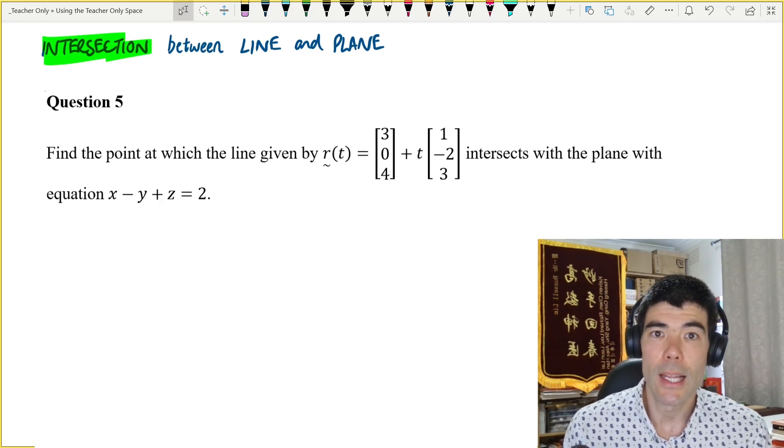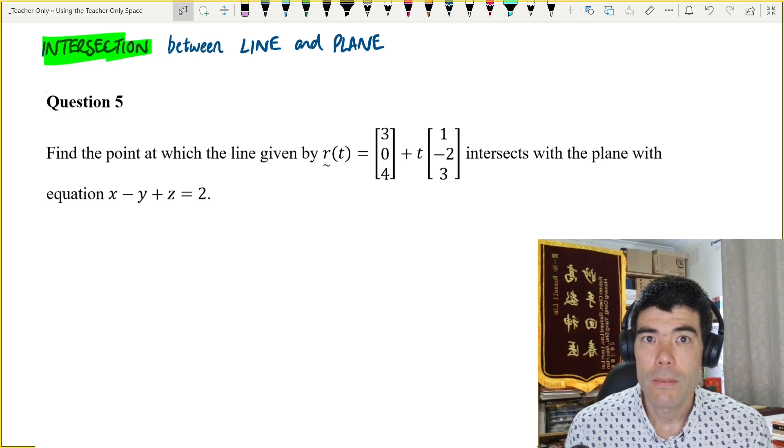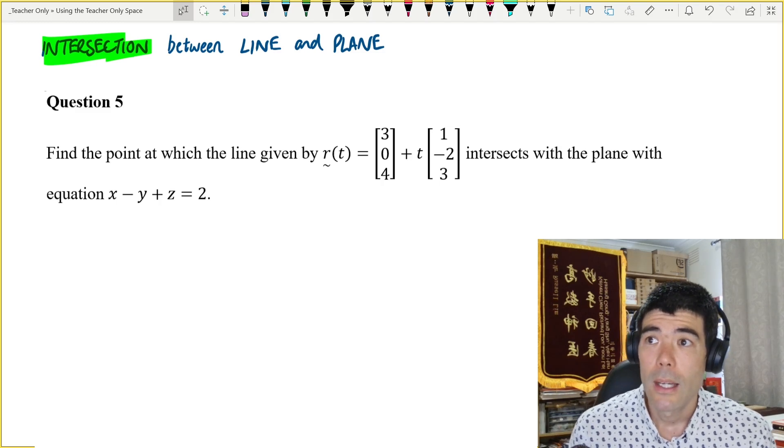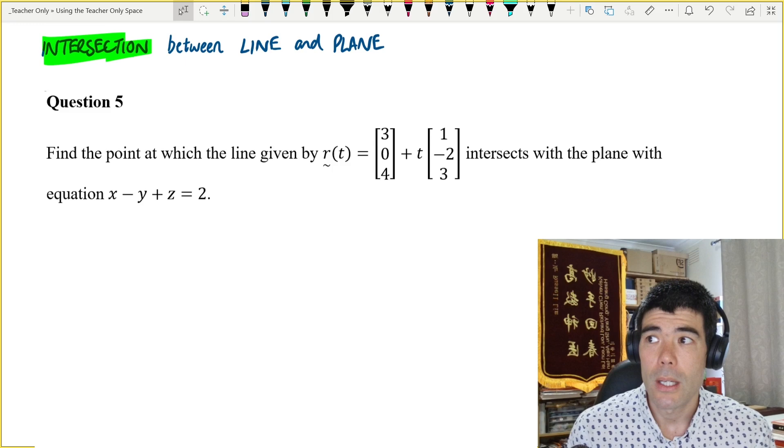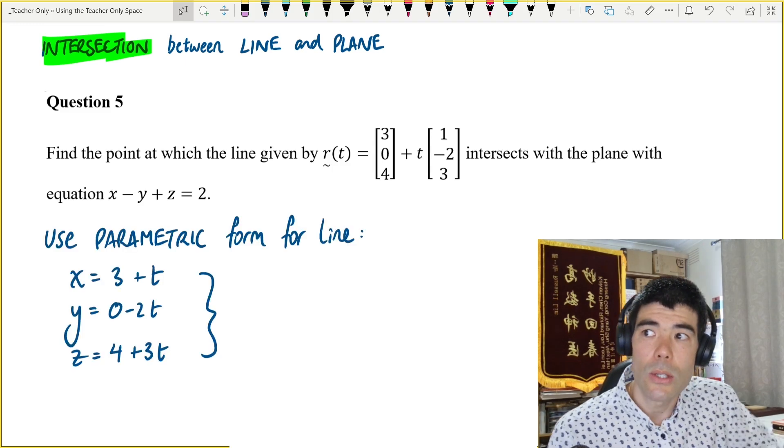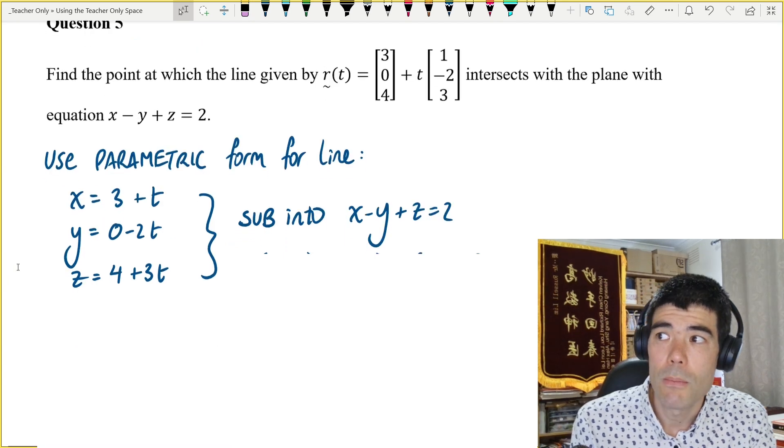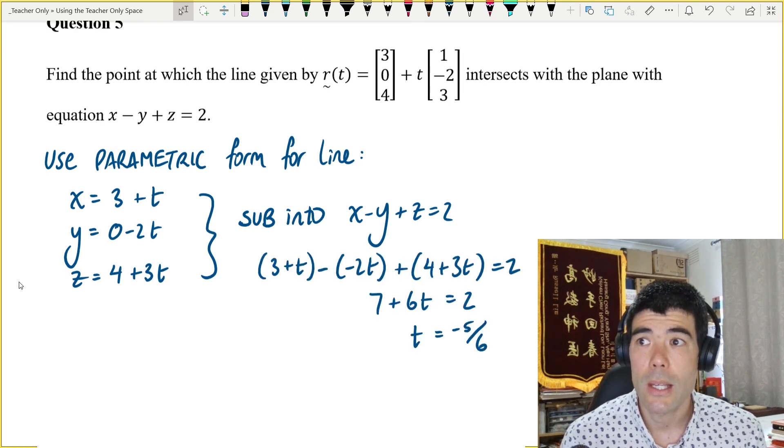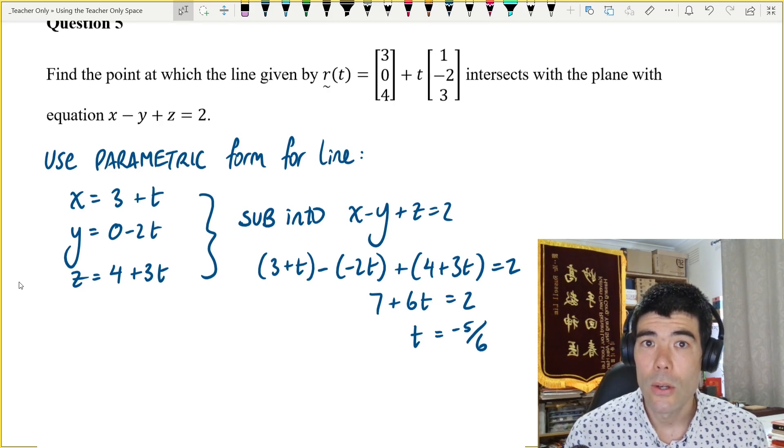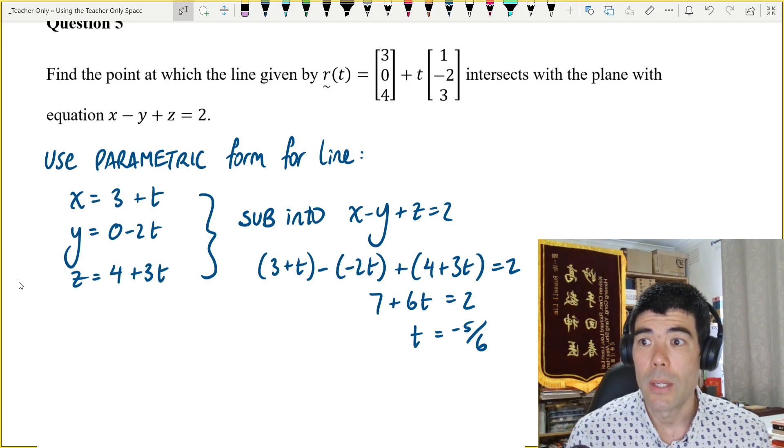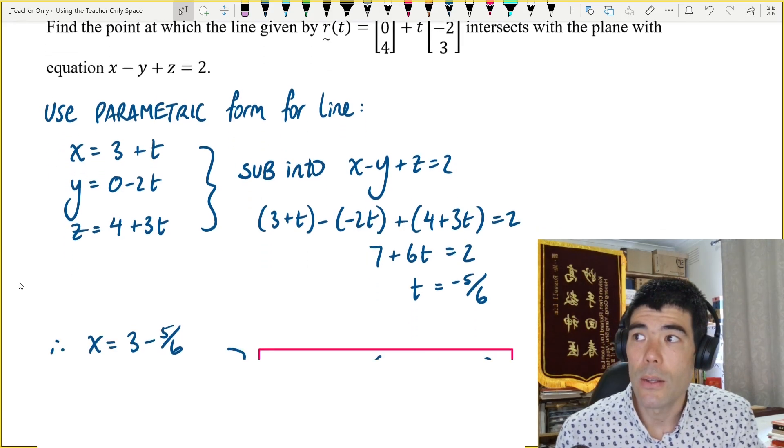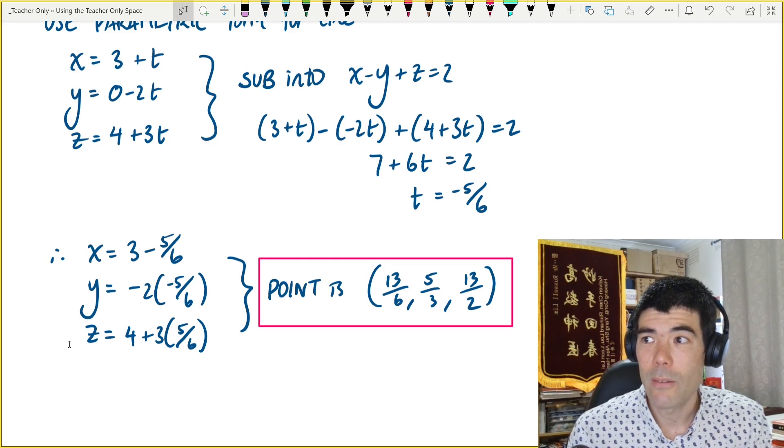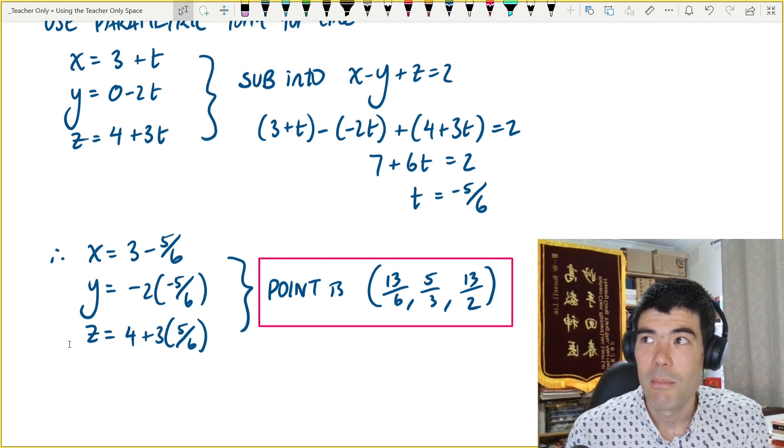Next thing we'll look at is the intersection between a line and a plane. For intersection, so finding the point of intersection, generally, we're going to do these using simultaneous equations. So, for this example, find the point at which the line, given by R of t, intersects with the plane given by x minus y plus z is equal to 2. So, I think the easiest way to do this is to use the parametric form for the line. We break up the vector equation into parametric form, so x equals 3 plus t, y equals negative 2t, and z is equal to 4 plus 3t. Then, if we sub these three equations into x minus y plus z is equal to 2, we then only have one unknown, which is t. We can solve this equation for t, we get negative 5 over 6, and then we can sub that t value back into our three equations for our parametric form, in order to find the coordinates of the point of intersection. Now, if we're doing that without a calculator, of course, we need to be careful with our negatives, fractions, etc. But I've checked that one, I think it's right.